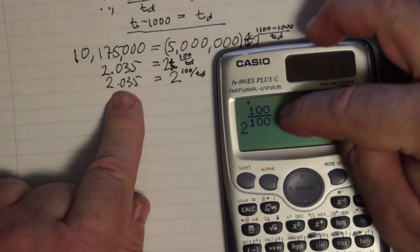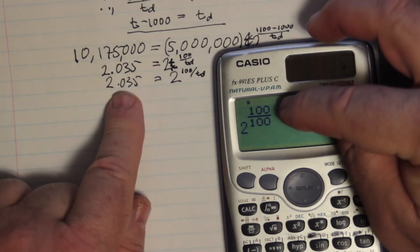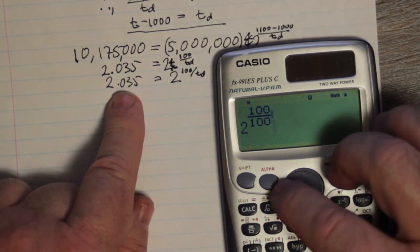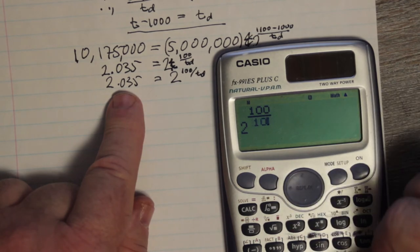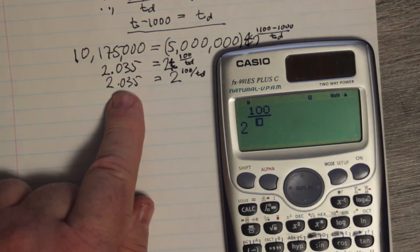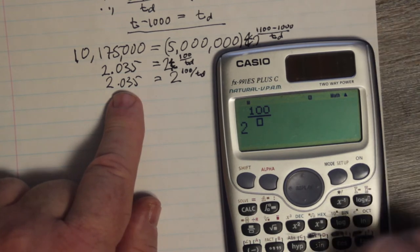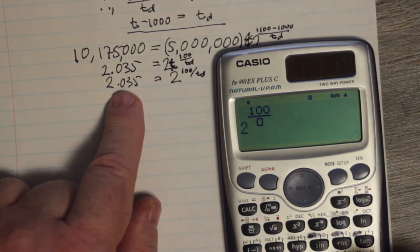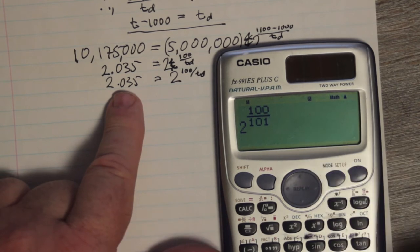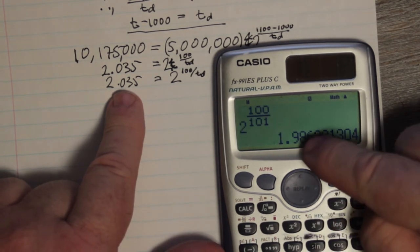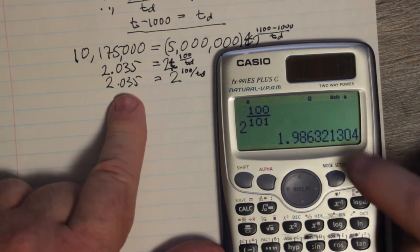Now how do I make it bigger than 1? By manipulating the bottom. I have to make it smaller. I can't make it bigger. So if I make it bigger, 2 to the 100 over 101, look what happens. I get a number less than 2. So I can't do that.